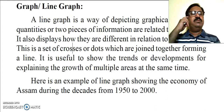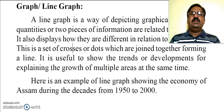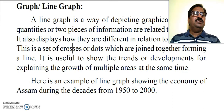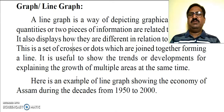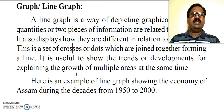Here in this diagram we are going to discuss the graph, or the line graph. Actually, two pieces of information are presented in a graph and two quantities are related to each other. This is a set of crosses or dots which are joined together to form a line, and that is why it is called a line graph.